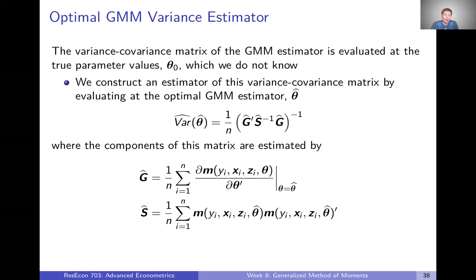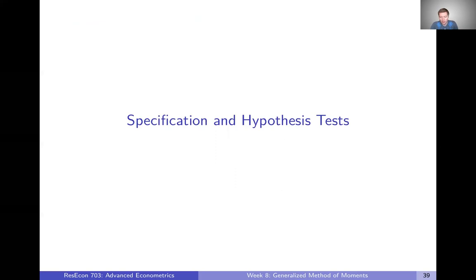In R, the GMM function will do all of this for us. There's no reason we couldn't do it by hand — it might be instructive — but we'll let R handle that. Now that we have the optimal GMM estimator, we might want to test our model specification or test hypotheses about our parameters, and we'll talk about how to do that in the next video.